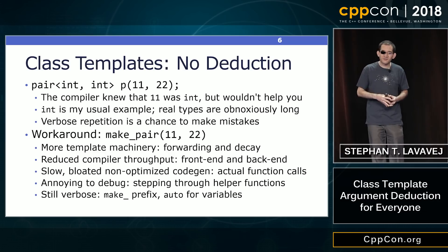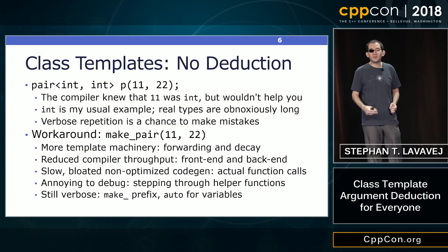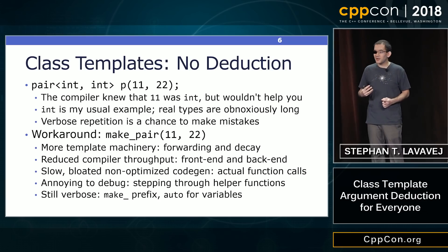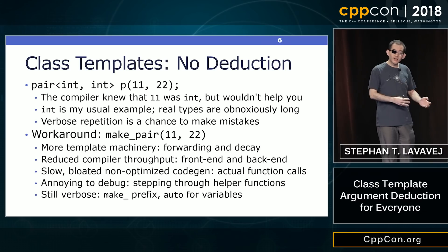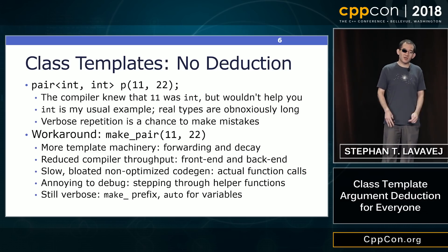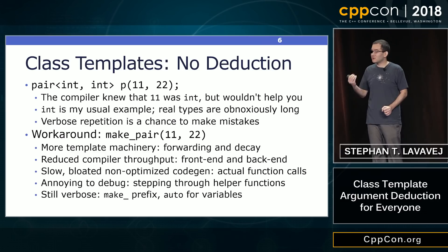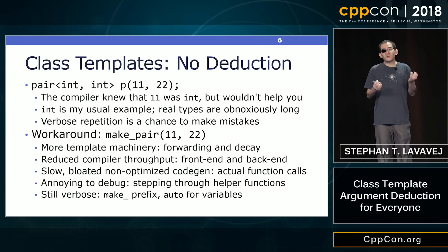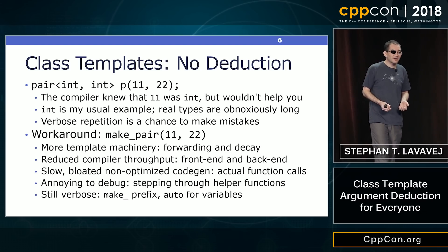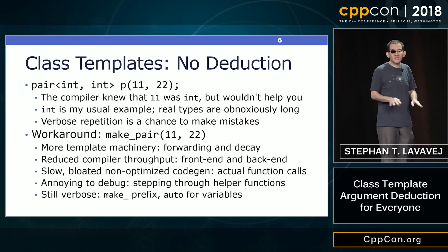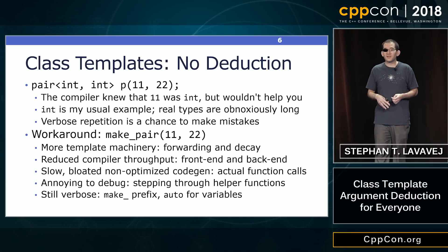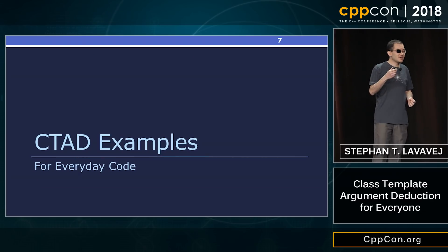But this workaround is bad in many different ways. You've got extra template machinery to perfectly forward arguments and perform the decay to get an expected pair type. That machinery is complicated, there are so many corner cases to it, and it's also slow to compile. Every call to make_pair very slightly slows down your compilation. Also, in debug mode, you are going to actually have to step through actual function calls — so that's increased code size and a reduced debugging experience. And even ignoring throughput, it's verbose: you've got the make_ prefix, you've got auto if you're going to store it. When all you wanted was a pair.